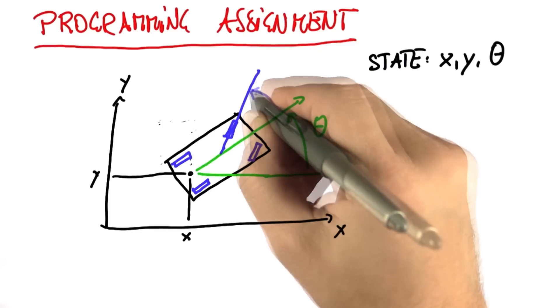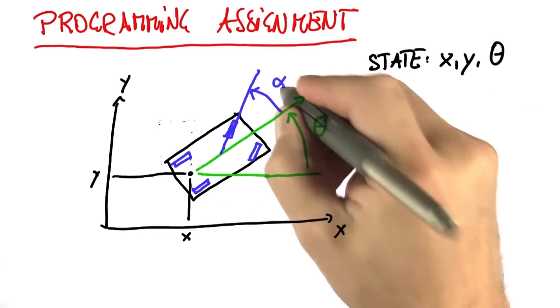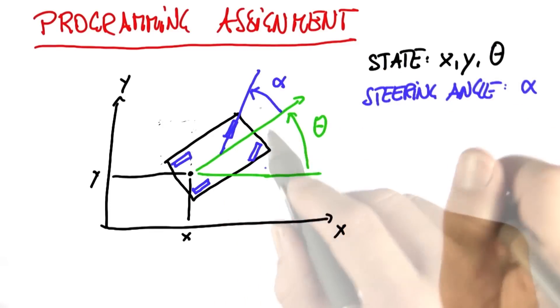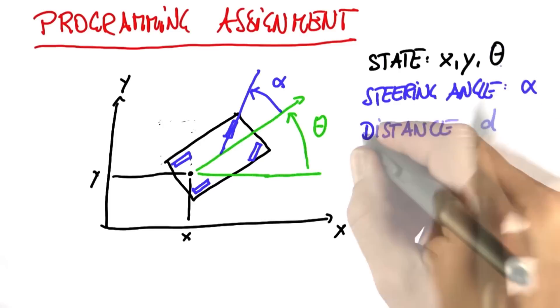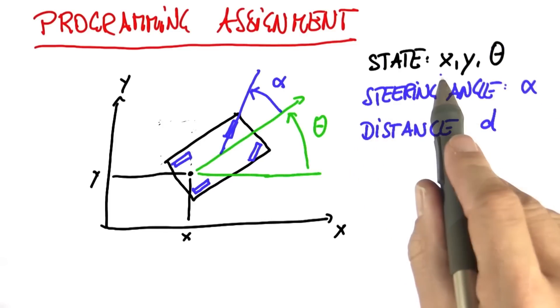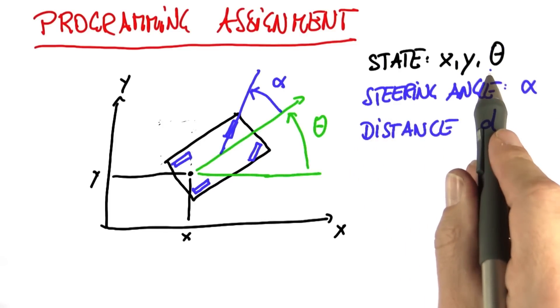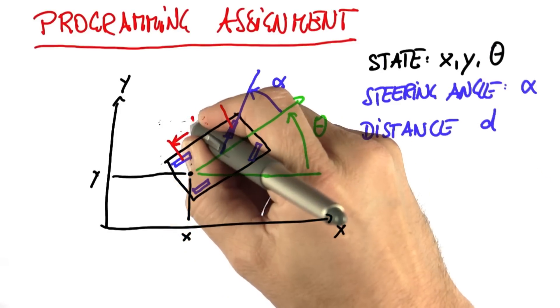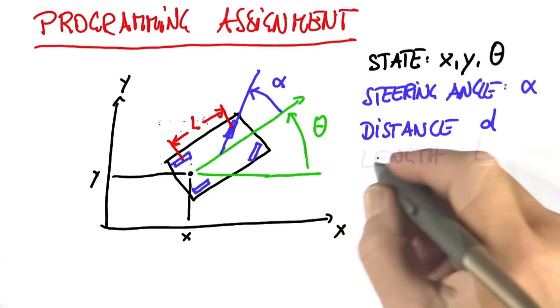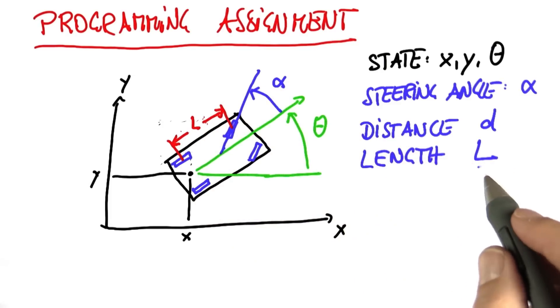Then this car also has a steering angle, called alpha. The question is, how is the state affected by driving a certain distance d with a fixed steering angle, assuming the initial state is x, y, and theta? It turns out to answer this, I also need to know the length of the vehicle, which I would just call L for length. That is a constant throughout our consideration.